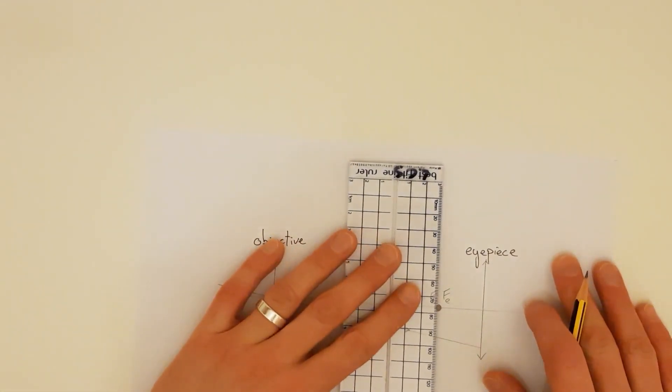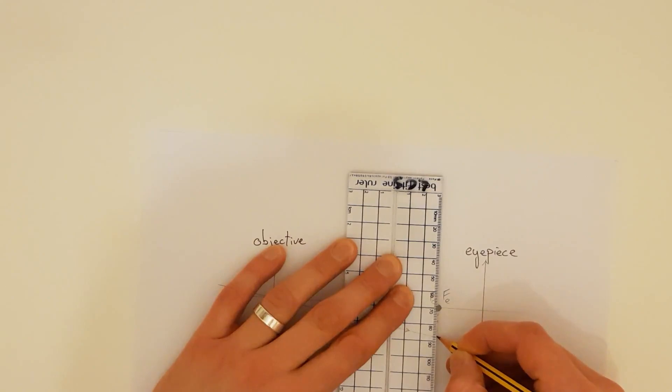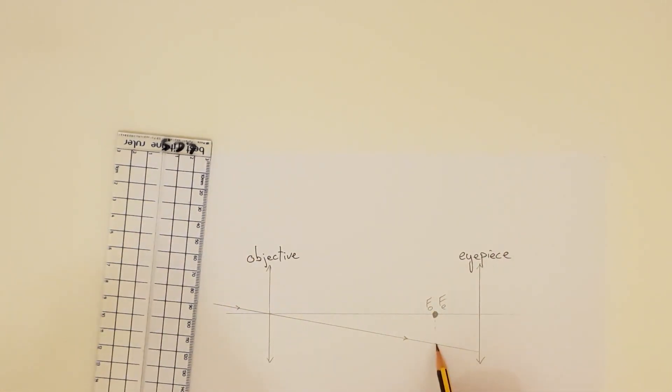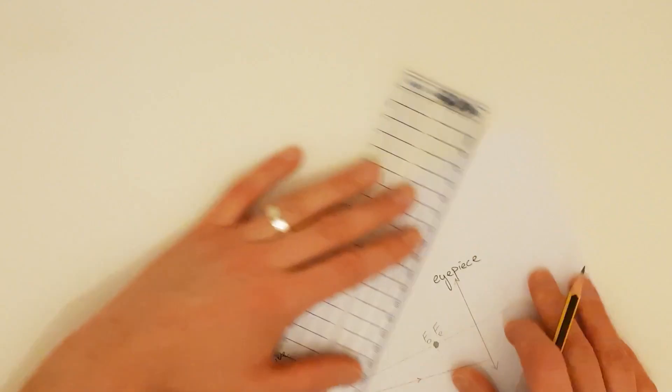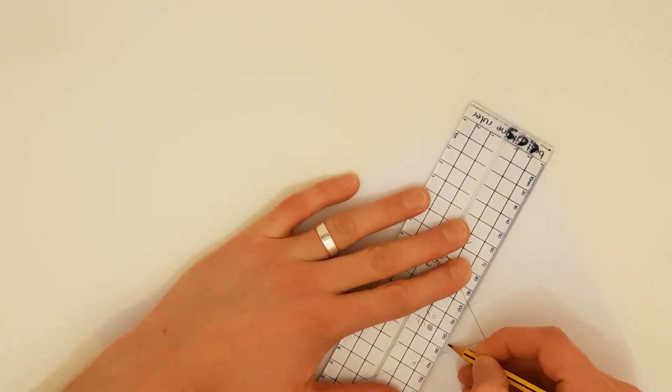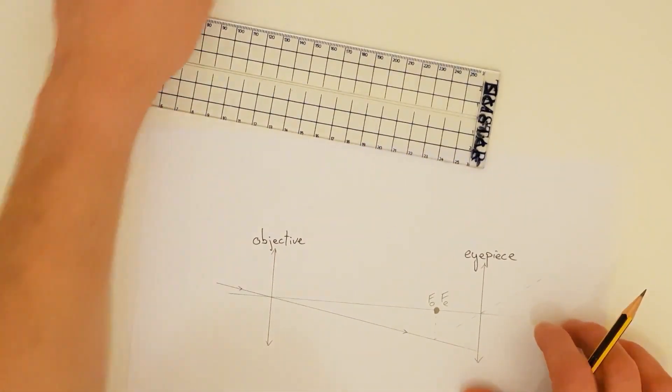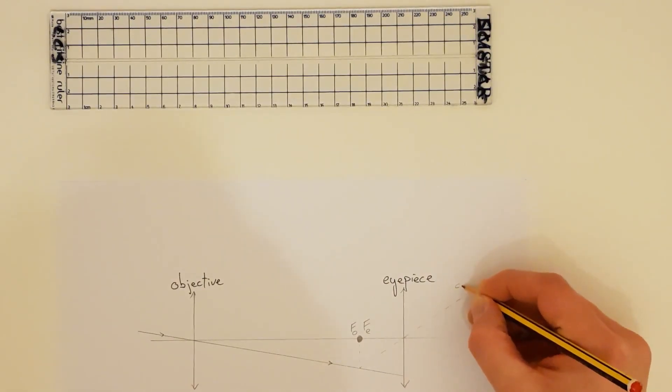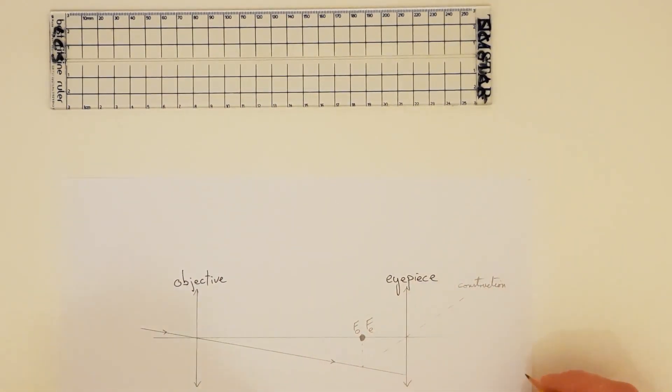The next thing we can do is we can mark on what's called a construction line. So I'm going to dash a couple of lines here moving up from my principal foci to meet my first ray and this is the place where the intermediate image would be formed. But I'm also now going to draw a line passing through the center of my eyepiece lens that will meet this point and again I'm just going to dash this and this is called a construction line. So this line will help me build the rest of my image. So I'm going to label this construction line to make sure that the examiner doesn't think that it belongs to any other part of the diagram.